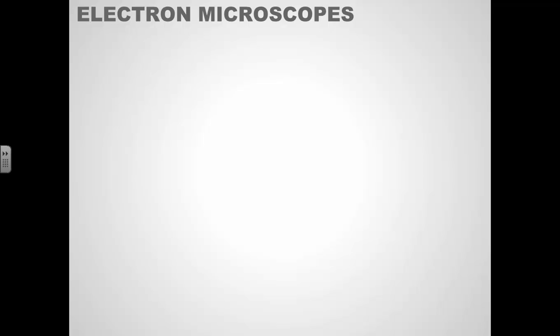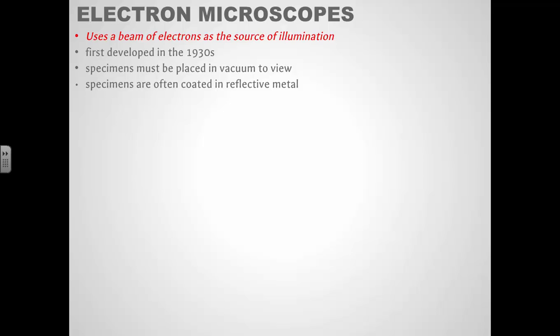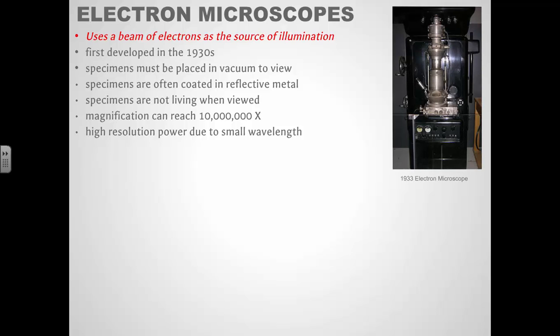There's also electron microscopes, which give a really high level of magnification and resolution. They use a beam of electrons rather than a beam of light. That's their source of illumination. They were developed in the 1930s. The specimen has to be placed in a special vacuum chamber in order to view it. Often the specimen has to be coated in metal. So we can't generally look at live specimens. But it can give you magnification up to 10 million times. So pretty impressive magnification. Very high resolution images because the beam of electrons is a very, very small waveform. This is like one of the first electron microscopes. This huge piece of equipment in the 1930s.